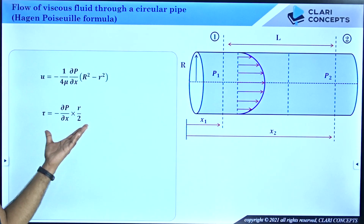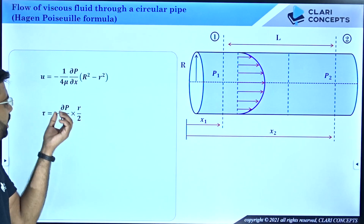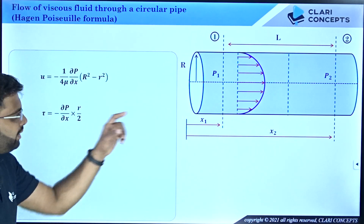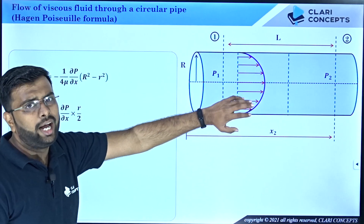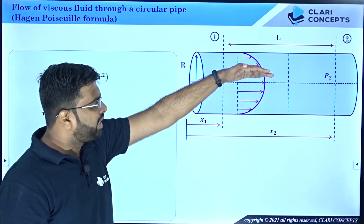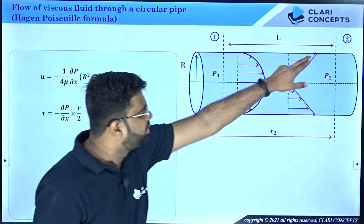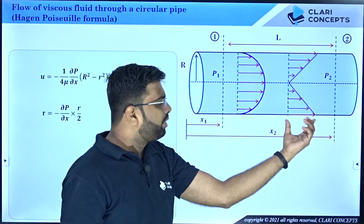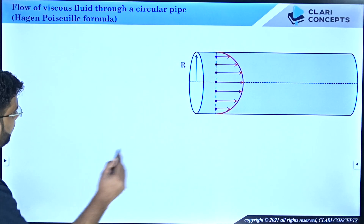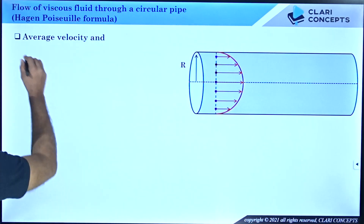We also saw that the shear stress distribution is given by: τ = −(∂P/∂x) × (r/2). This means shear stress is maximum at the boundary (r = R) and minimum — equal to zero — at the center. So the shear stress at the center is 0 and at the boundary is highest. Now we will continue to derive the formula for average velocity.